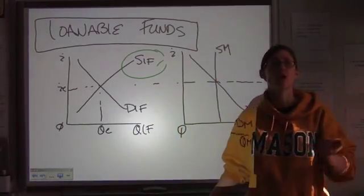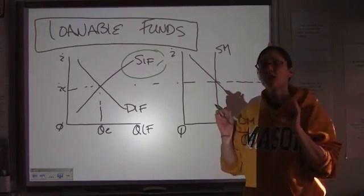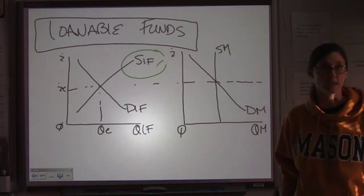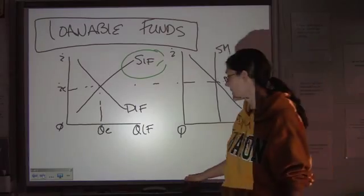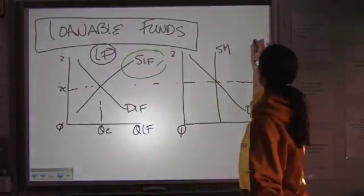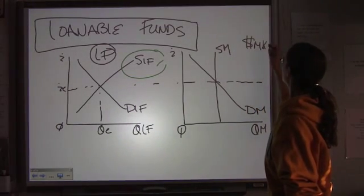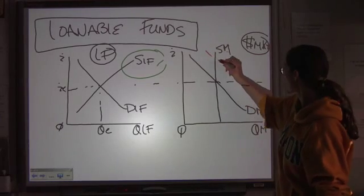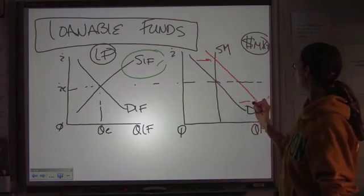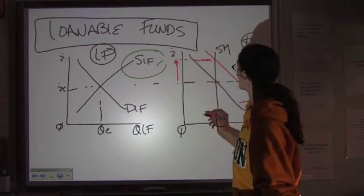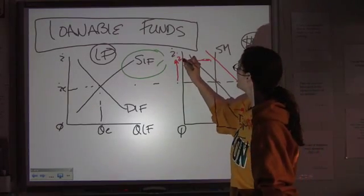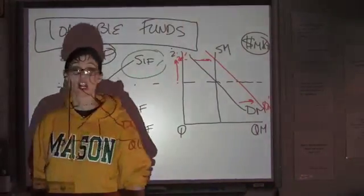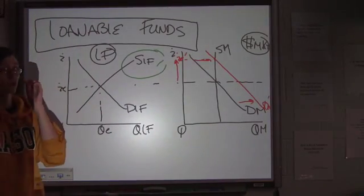Alright. So how do we show government deficit spending? If the government is running a deficit, then that means that the government is demanding money in order to spend it. So on the money market graph, you make sure you have these straight. This is loanable funds. This is the money market. On the money market, government's running a deficit. That means government is demanding more money. We want to show a shift to the right. And we jack up interest rates. So this was our equilibrium interest rate across both graphs. We just pushed the interest rate up.